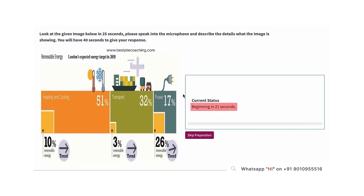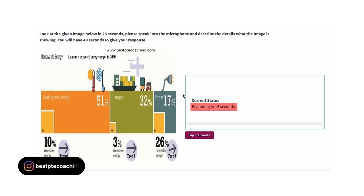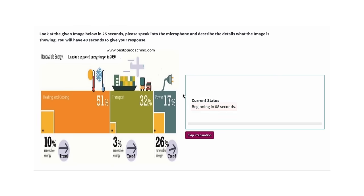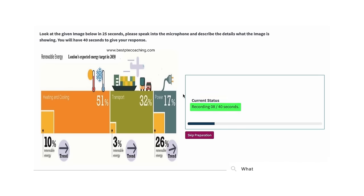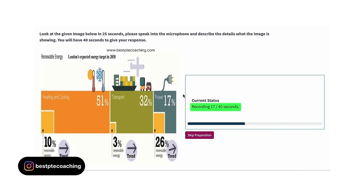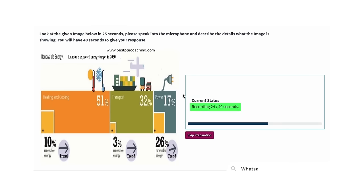Demo answer for an image about 'Renewable Energy — London's Expected Energy Target in 2030': 'The image explains information about renewable energy, London's expected energy target in 2030. I am supposed to speak for 40 seconds on this image. There are different parts in the image which are heating and cooling 51%, transport 32%, and also it has power 7%. One of the parts has maximum value while the other has minimum value. To conclude, the image is highly informative and insightful.'